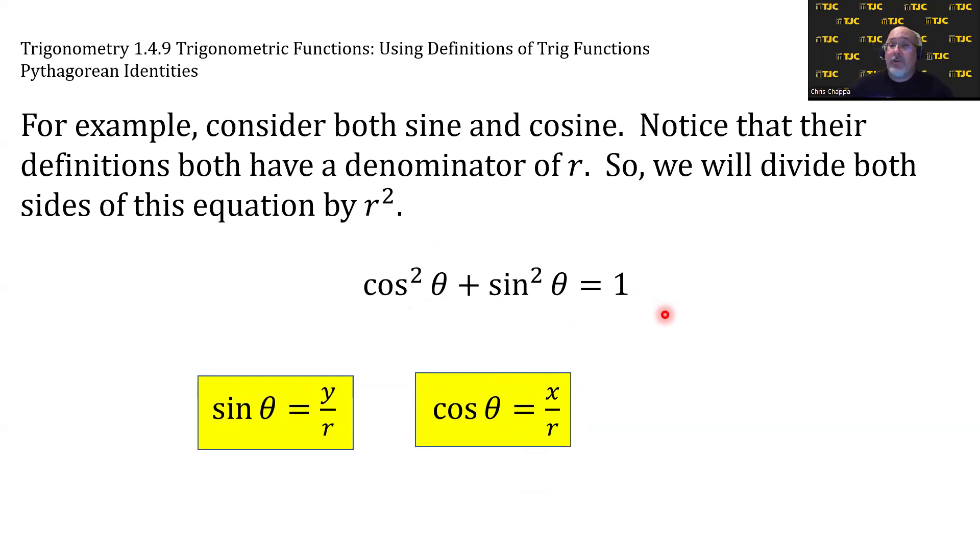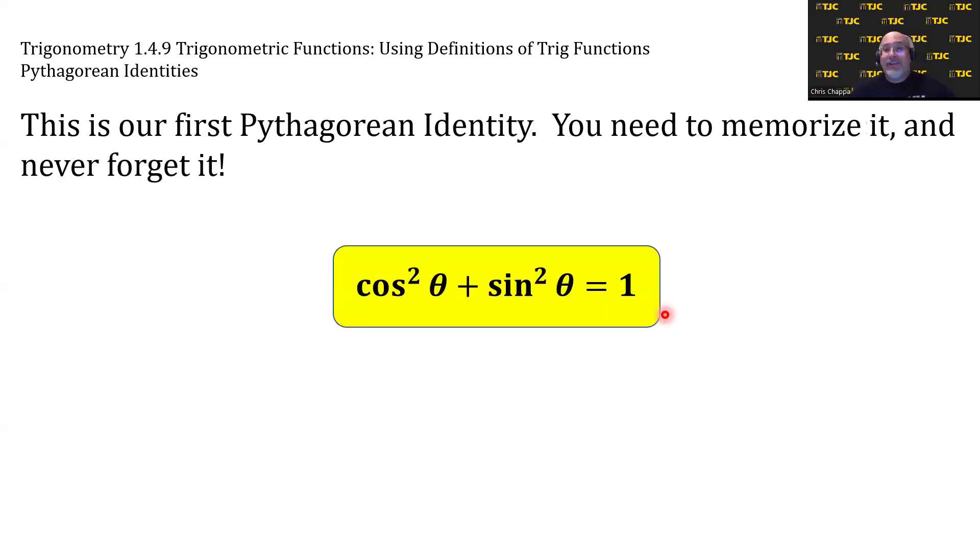So here is our first Pythagorean identity. You need to memorize it and never forget it. Cosine squared theta plus sine squared theta equals one, regardless of the value of theta.